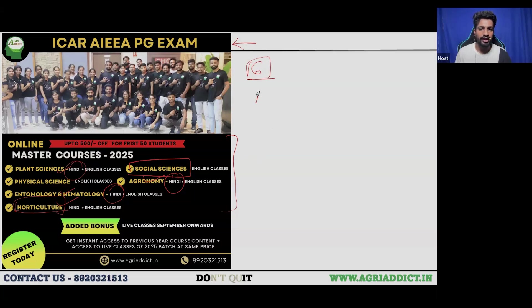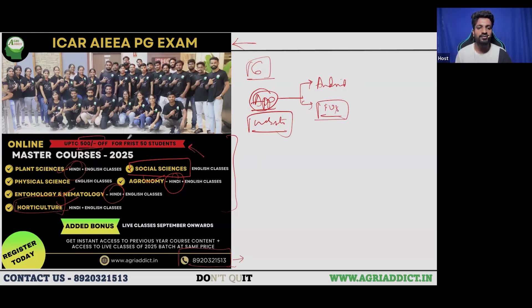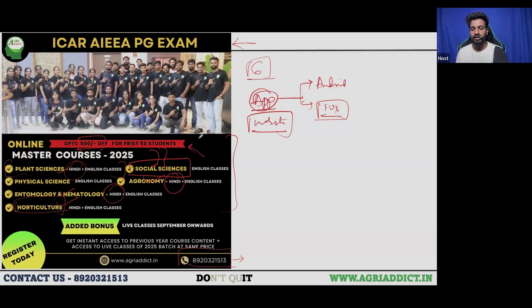The AgriAddict platform is available as both an application and a website. We previously had only an Android application, but we have now also launched an iOS application for Apple users. There is a 500 rupee discount for the first 50 students across all courses except Plant Science, where the offer has already expired. For all other courses, the offer is still valid.